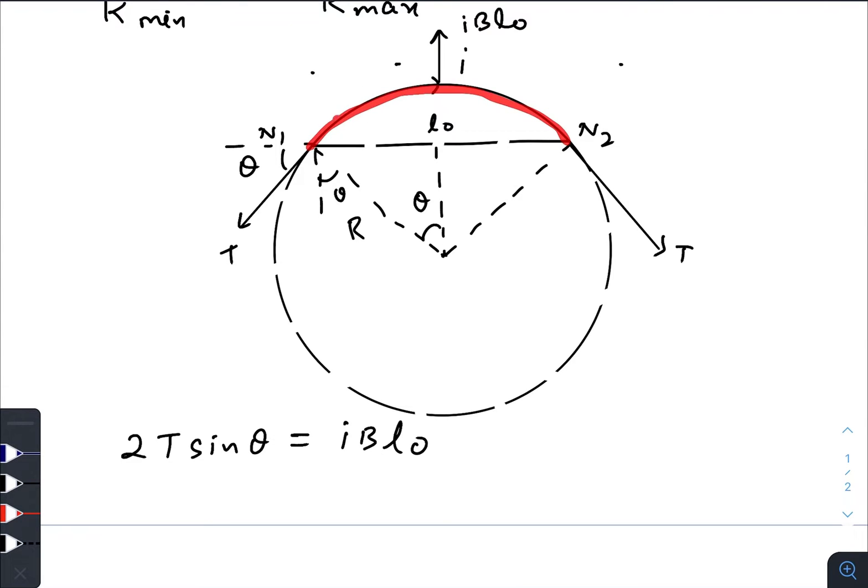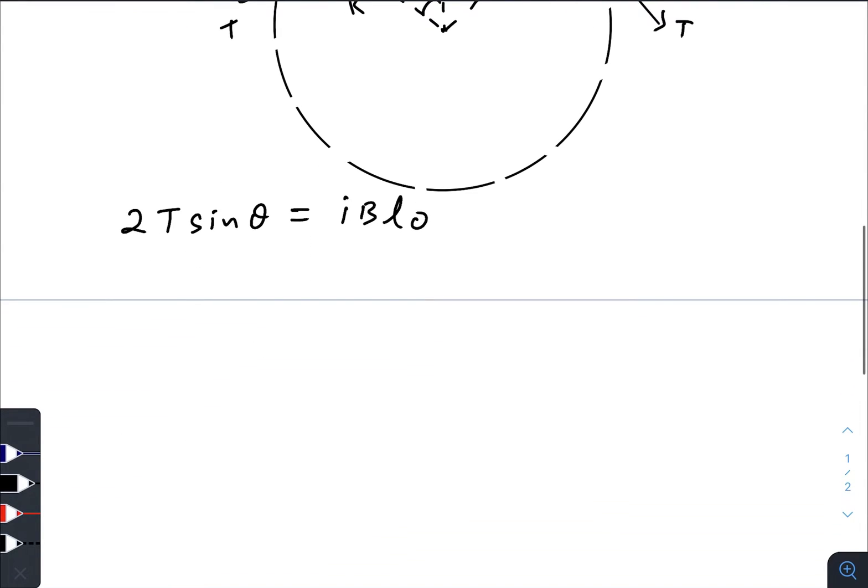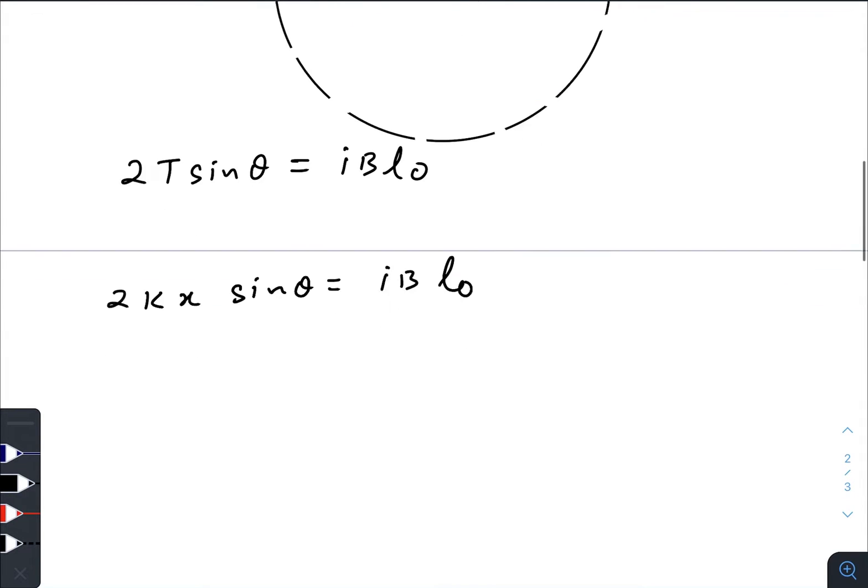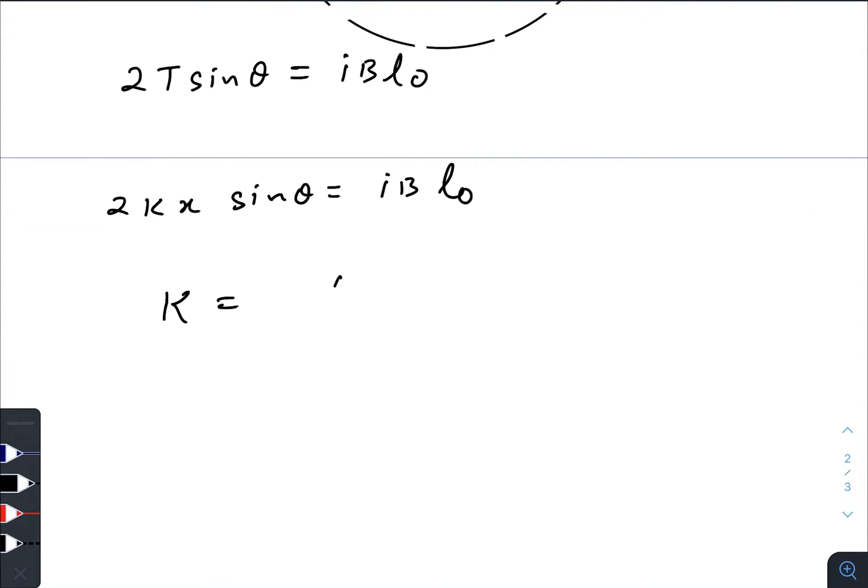If we consider this whole wire like a spring and let x be the extension of the spring, then there would be a force due to the spring in the opposite direction, let that be kx. So basically the tension is balanced by the spring force. We can write 2kx sin θ equals IBl₀.